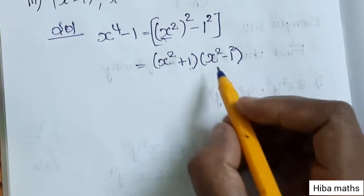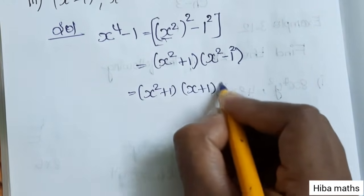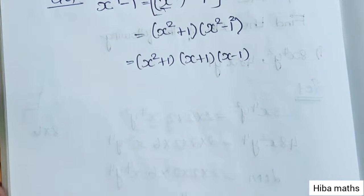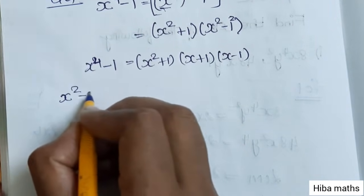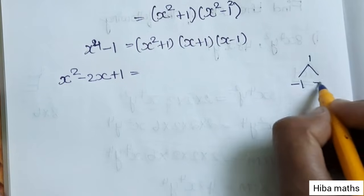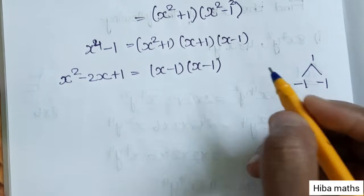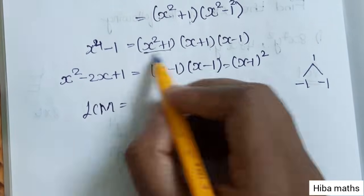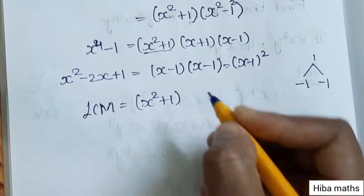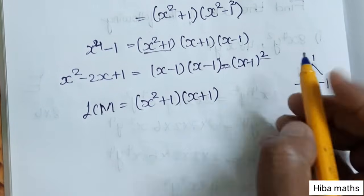x² minus 1 can again be factored using a² minus b² to give (x+1)(x-1). For the second expression, x² minus 2x plus 1 factorizes as (x-1)². So x⁴ minus 1 = (x²+1)(x+1)(x-1). The common term between both expressions is (x-1). The highest power of x-1 is (x-1)². Therefore LCM = (x²+1)(x+1)(x-1)².